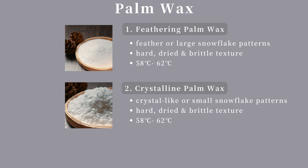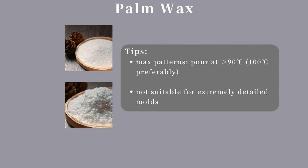The fifth type is palm wax, a natural wax extracted from palm trees, categorized into crystalline and non-crystalline types. Feathering palm wax and crystalline palm wax are commonly used in handmade candles, producing feather and crystalline effects. To maximize texture, ensure the pouring temperature is about 90°C and heat the mold beforehand. If the pouring temperature is below 65°C, there will be no crystalline effect, resulting in a frosty matte texture. Palm wax is brittle and not recommended for detailed molds, as they may break during demolding.